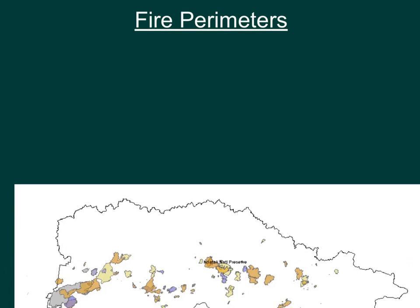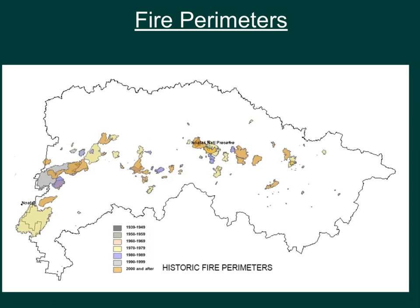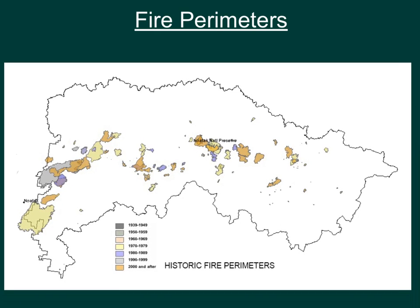Maps showing fire perimeters. We can see where there have been fires in the past and which areas are more prone to catching fire. Chances are that these areas and surrounding areas are going to be cleared when they catch fire. So you wouldn't want to rely on these areas to sustain a population completely on their own.